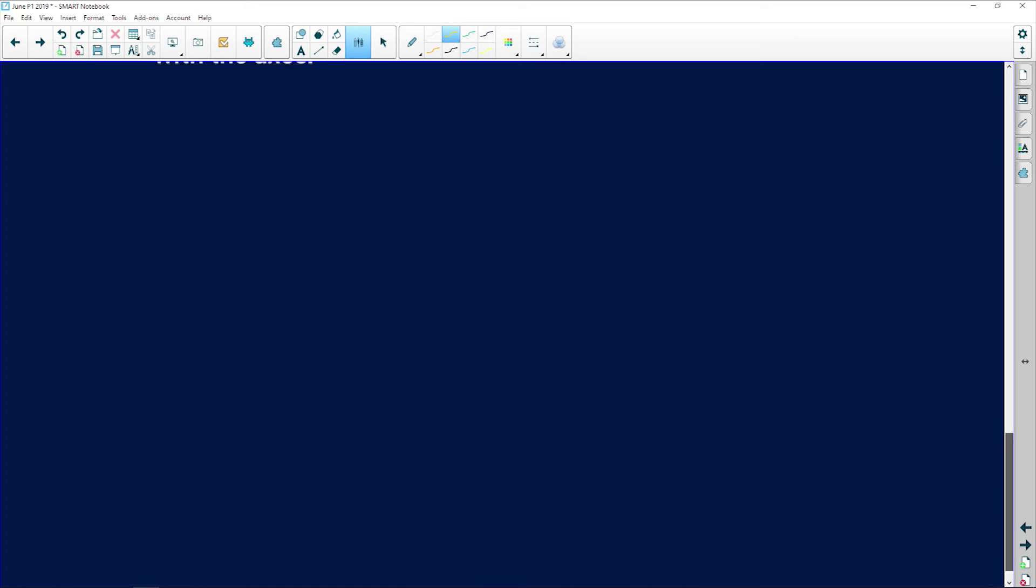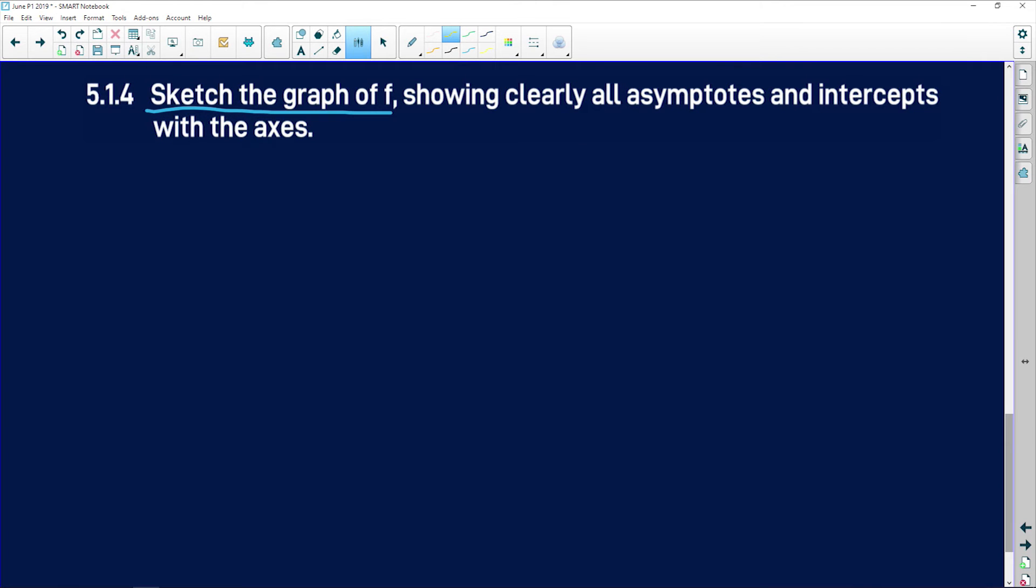So with a hyperbola, what you want to start with, obviously you're going to need your axes. Guys, please use a ruler. So your axes, label them nicely: y, x. So here we have negative 1, negative 2, and that is going to be your one asymptote.